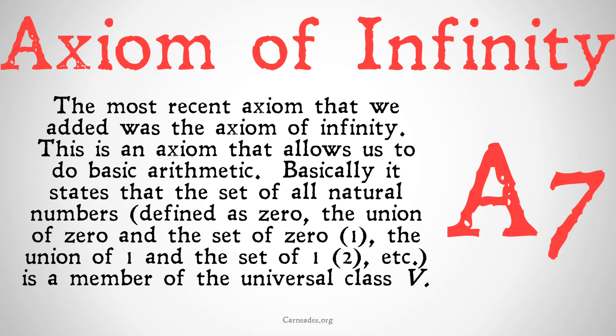And finally, the most recent axiom that we added was the axiom of infinity. This is the axiom that allows us to do basic arithmetic. Basically, it states that the set of all natural numbers — defined as 0, the union of 0 and the set of 0 (which is 1), the union of 1 and the set of 1 (which is 2), etc. — is a member of the universal class.